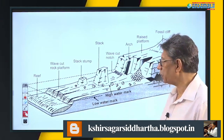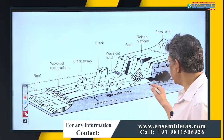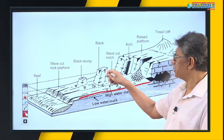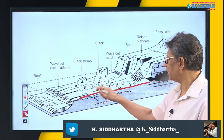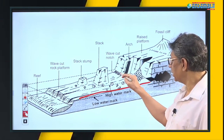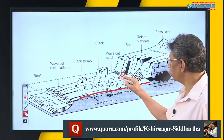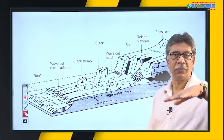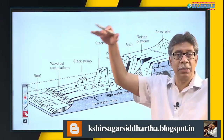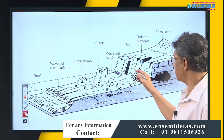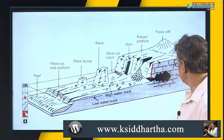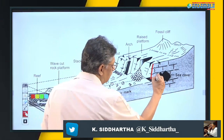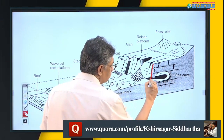In a 3D picture of this region, the entire flat area is the wave cut platform. There is stack and stump — the stack is taller and the stump is just below the high tide level. The notch is the carved hollow at the base of the cliff. An arc is almost like a bridge — two pillars with a slab over them. Sea caves are present in the same region and will ultimately collapse from the top.